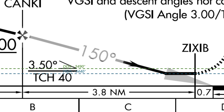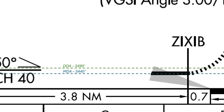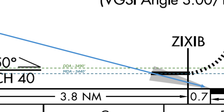So there are two courses of action with a derived decision altitude. Number one: we descend on the constant angle to the DDA, gain the required visual references to continue the approach, proceed below MDA and land, all using that same constant descent angle. Or, we get to the DDA, don't have the required visual references, execute a climb out staying above the MDA, stay on the approach course to the missed approach point ZIGZIB, then carry out the missed approach instructions.